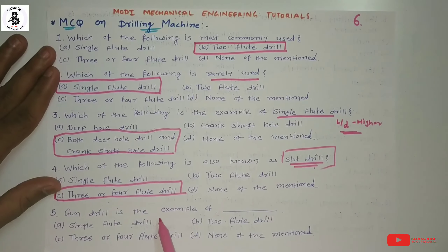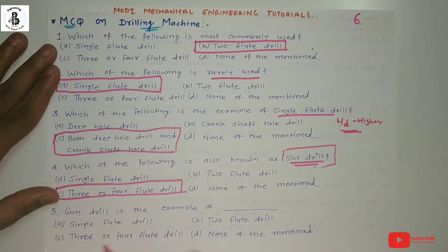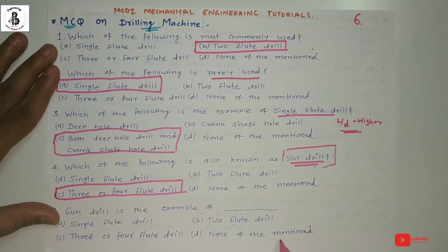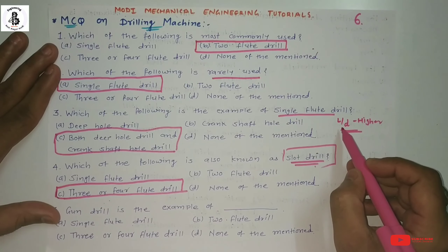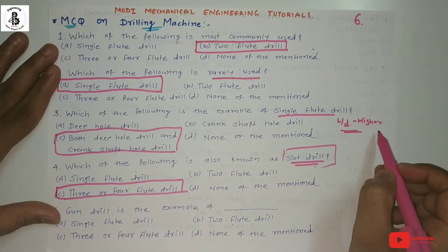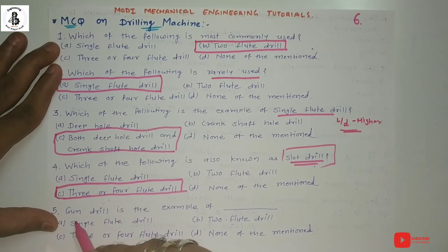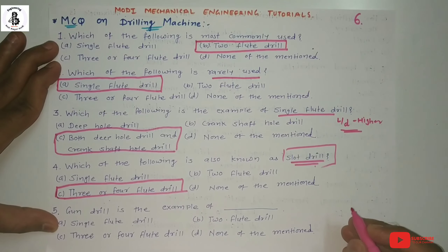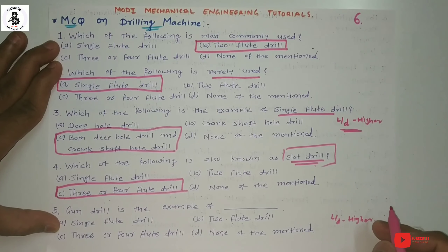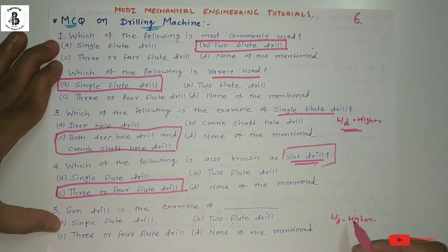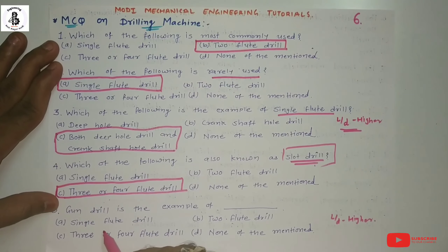Question five: Gun drill is the example of — Option A single flute drill. Option B two flute drill. Option C three or four flute drill. Option D none of the above. As discussed in question three, for a higher L by D ratio — length to diameter ratio — a single flute drill is used for deep hole drilling. A gun drill also has a higher L by D ratio, so a single flute drill is used for gun drill manufacture. Option A is the answer.